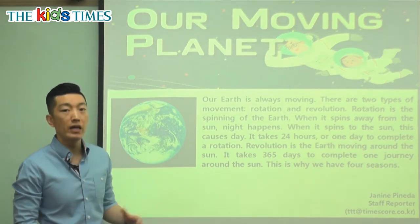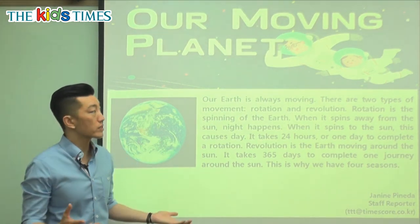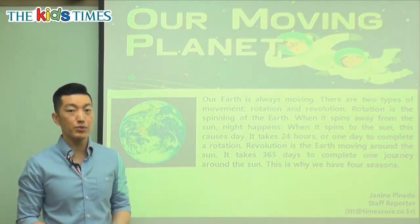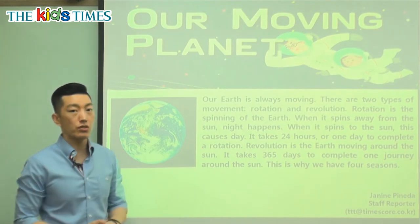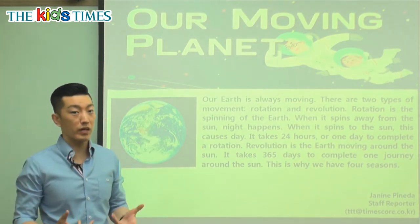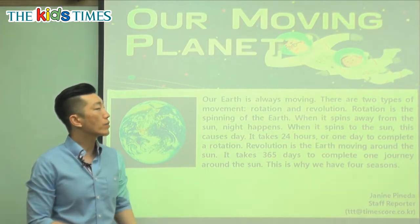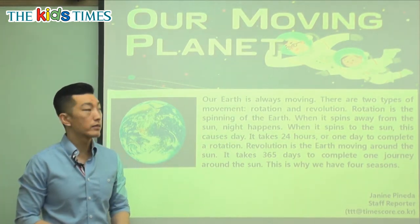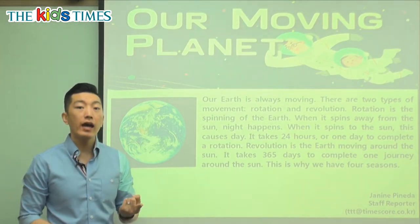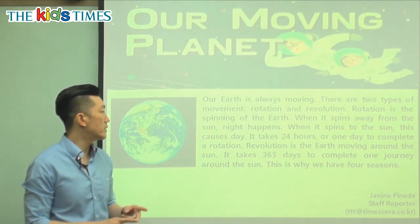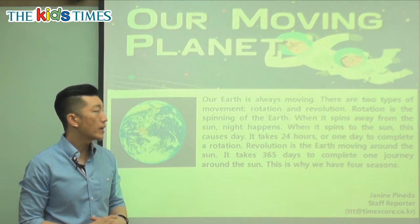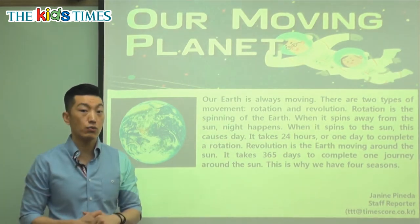Planet is our home and in the solar system there are eight planets. There used to be nine but then they realized Pluto is a dwarf planet. Our planet is Earth and it says it is moving. Our Earth is always moving. There are two types of movement: rotation and revolution.